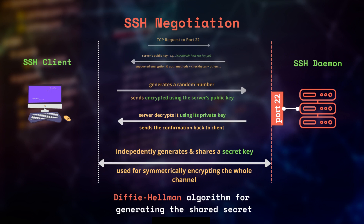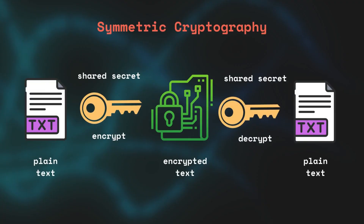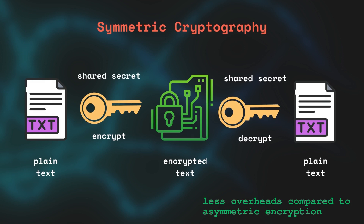This symmetric key will be used for all further communication between the client and the server. In contrast to an asymmetric key pair where the public key is used for encryption and the private key for decryption, a symmetric key involves only one key, which is used for both encryption and decryption. The main reason for using a symmetric key is that symmetric encryption has less overhead than using a pair of asymmetric keys.